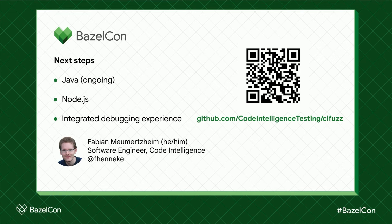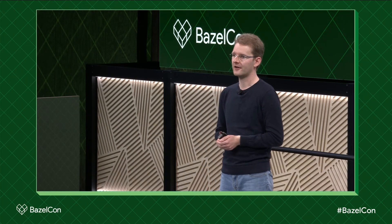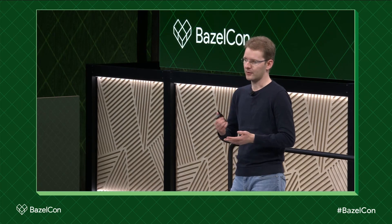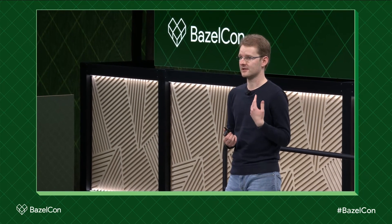To wrap up, the tool is on GitHub, fully open source, written in Go — feel free to check it out. We have Bazel C++ support, and Bazel Java support is pretty close to finishing. Since we're a fuzzing company, we also build actual fuzzers — our newest achievement is a fuzzer for Node.js called Jazzer.js, which will be integrated in this tool soon. We're always looking into ways to make it easier to debug findings and fix them quickly. If you're interested in the open source or commercial offerings, come talk to me.